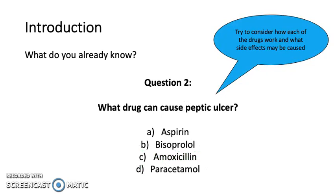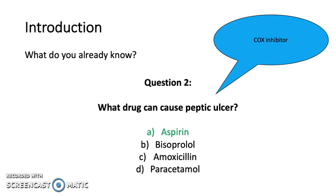Question 2: What drug can cause peptic ulcer? Is it A. aspirin, B. bisoprolol, C. amoxicillin, or D. paracetamol? The answer is A, aspirin.